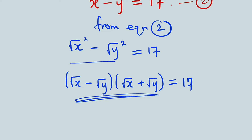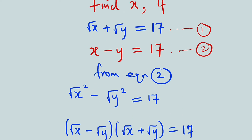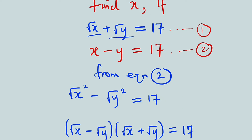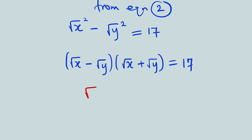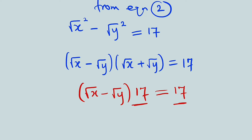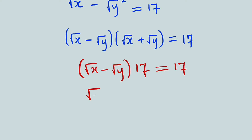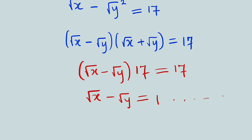Remember, if you expand this you have to get the original back. But from equation 1, we have seen that square root of x plus square root of y is 17, so we can substitute it here. We have square root of x minus square root of y, multiplied by 17, equal to 17. We can divide both sides by 17, and we realize that square root of x minus square root of y is equal to 1. This is another important equation — let's call it equation 3.